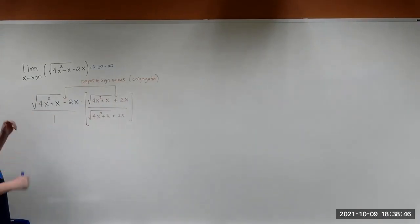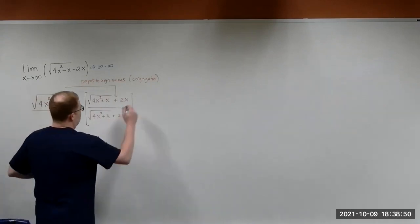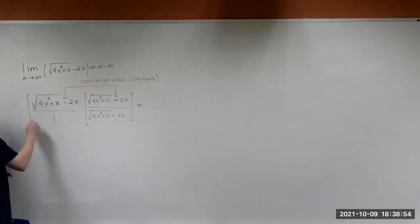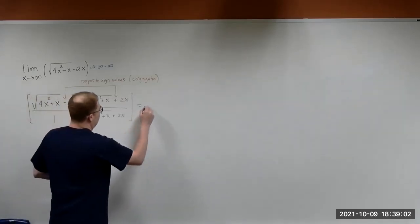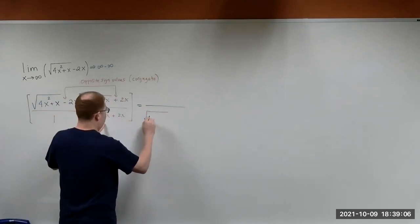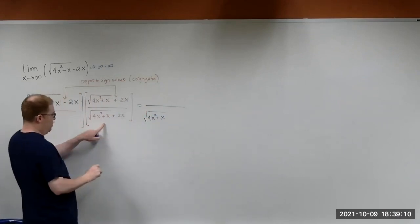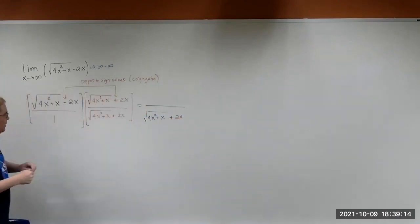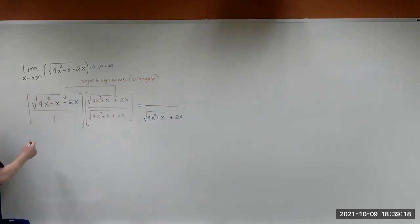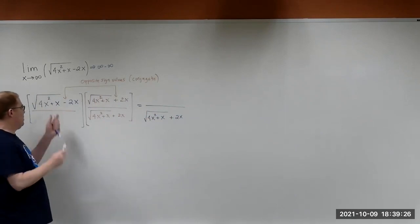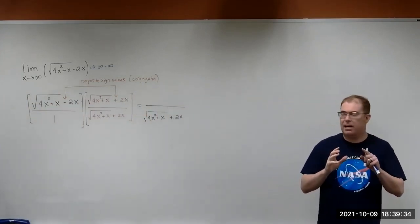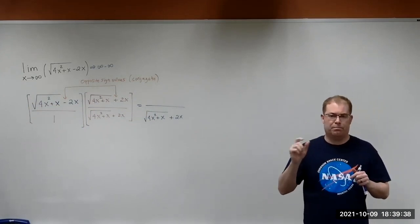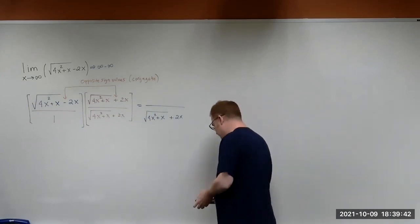Now we need to simplify this. I'm going to multiply this out, putting brackets around it to indicate we're multiplying these together. Let's look at the numerator. If you look closely, we have basically A minus B times A plus B. If you remember from pre-calculus, A minus B times A plus B gives you A squared minus B squared.